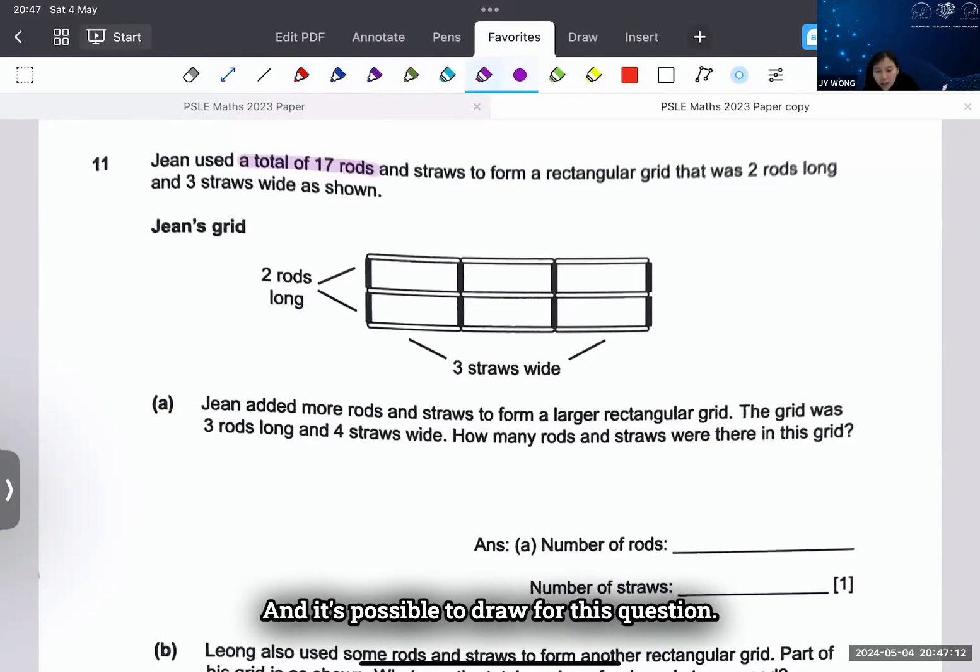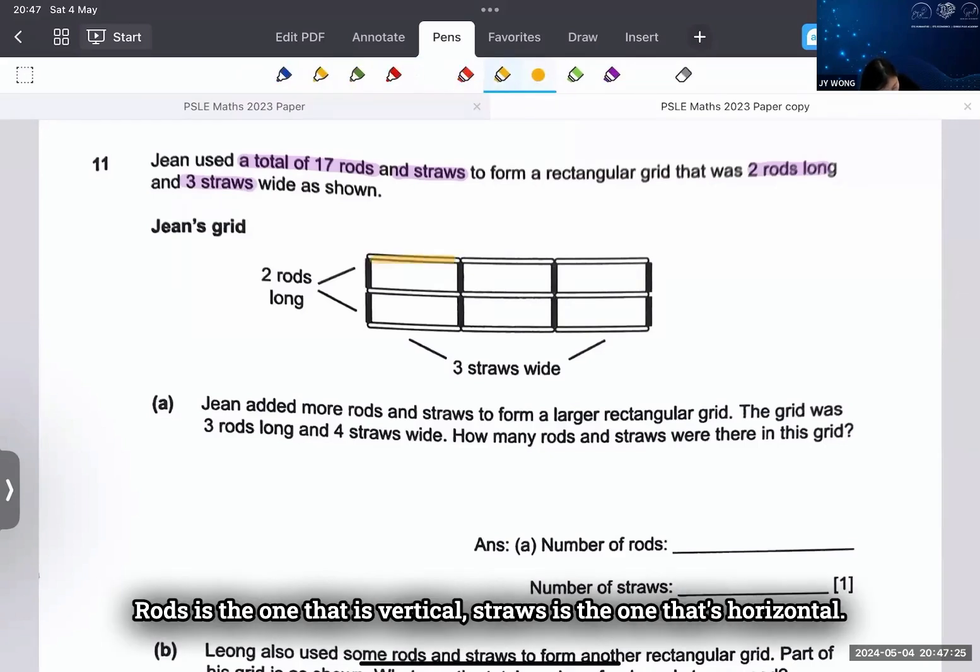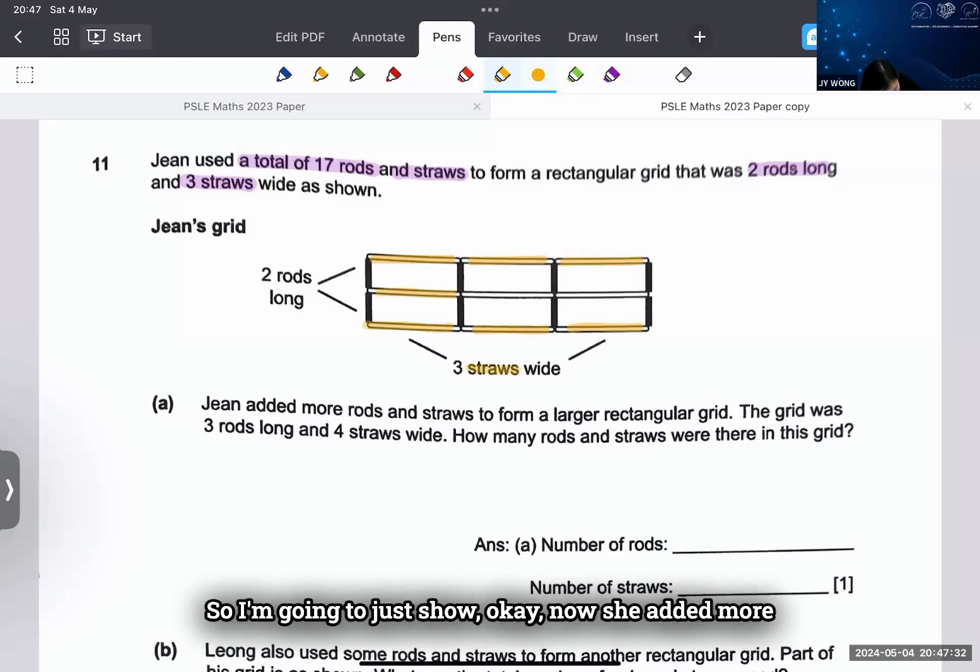It's possible to draw for this question: total of 17 rods and straws to form a rectangular grid that's 2 rods long and 3 straws wide. So I'm going to use two different colors - rods is the one that's vertical, straws is the one that's horizontal.